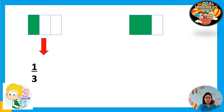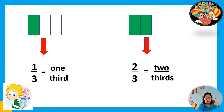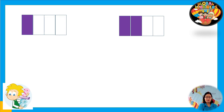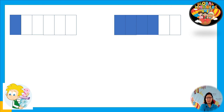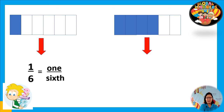The left side fraction is one third and the right side fraction is two thirds. What about this one? The left side is one fourth and the right fraction is two fourths. Now we have one sixth at the left side and four sixths on the right side.